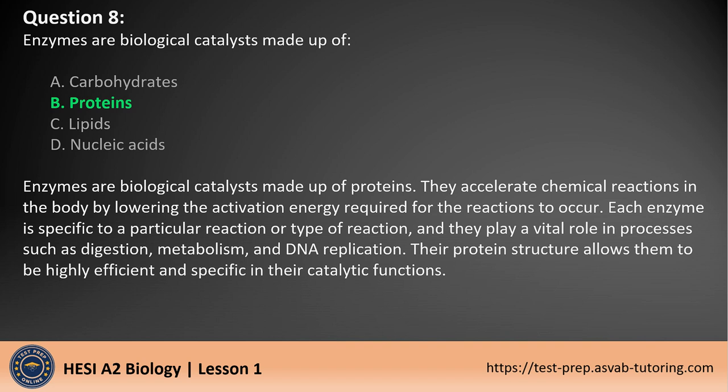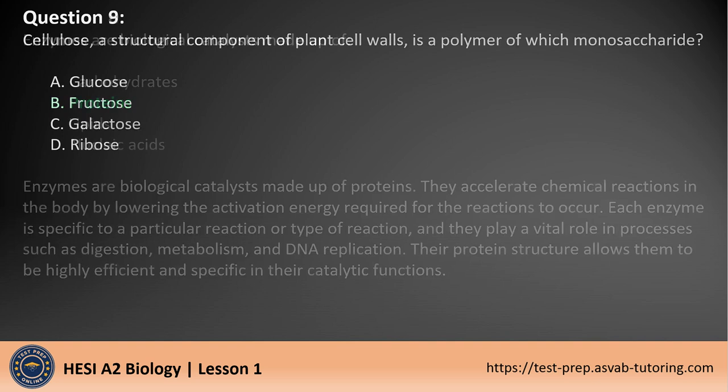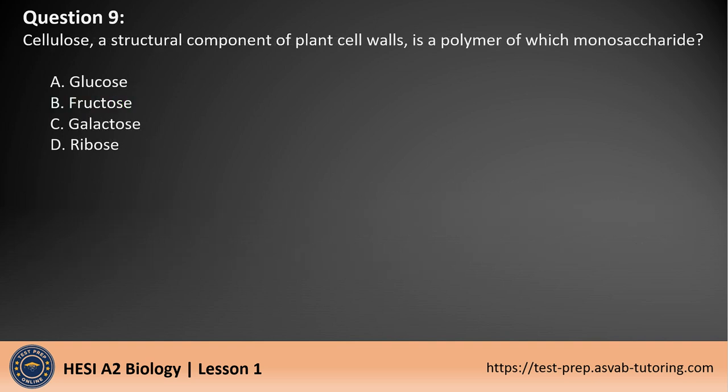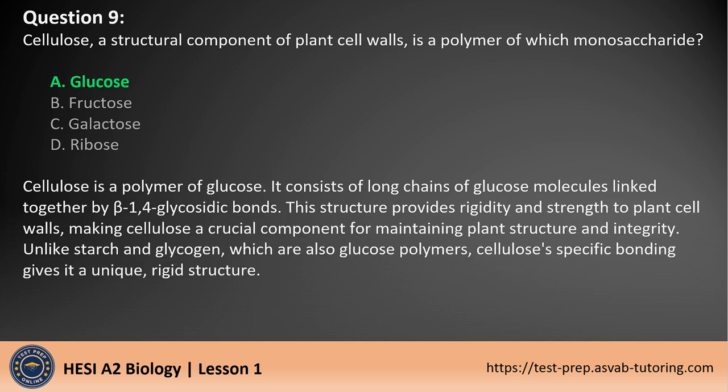Question 9. Cellulose, a structural component of plant cell walls, is a polymer of which monosaccharide? A. Glucose. B. Fructose. C. Galactose. D. Ribose. The answer is A.